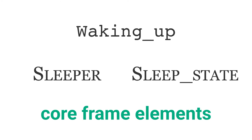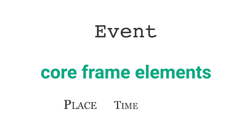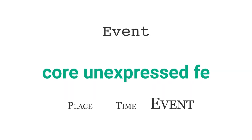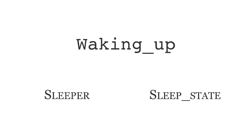Core frame elements define the frame and can even establish relations among each other. The waking up frame inherits the event frame. The event frame has three core frame elements: place, time, and event. However, this last one is a special type of element — a core unexpressed frame element. This notation designates a core frame element that may not be expressed in the frames inheriting it. This is precisely the case with the waking up frame, which does not feature an event core frame element, because the whole waking up frame is the event.